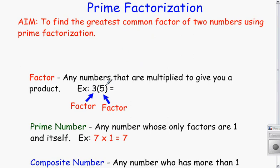First of all, you need to know what a factor is. You can see the word factor in factorization. A factor is basically any number that you can multiply together. In this case, 3 and 5 are both factors because you're multiplying them together to give you a product or the answer to a multiplication problem.